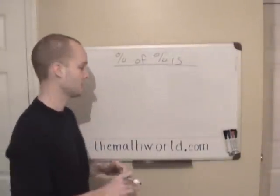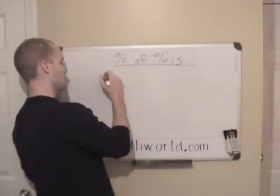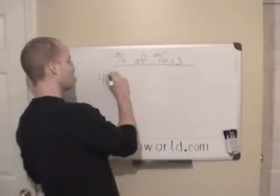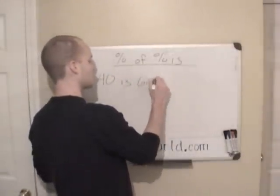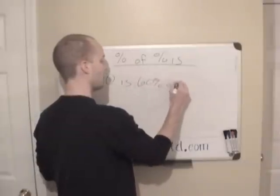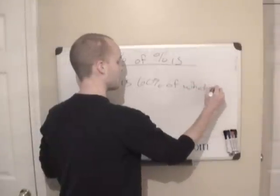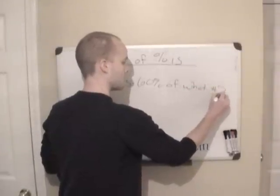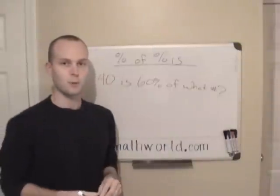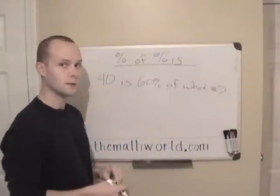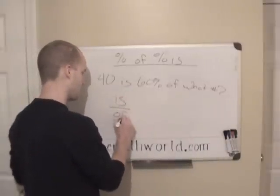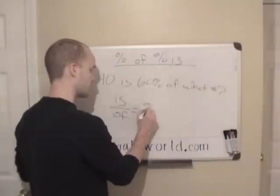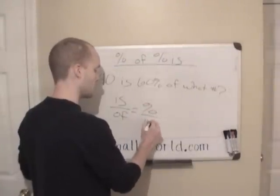And you'll see this a lot of times in a problem that might say 40 is 60% of what number? And any time you see a problem like this, the first thing you want to do is write is over of equals percent over 100.